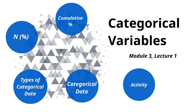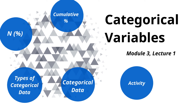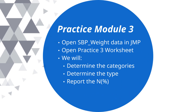For the next activity on introducing categorical variables, open practice module three in the SBP weight data, open the practice three worksheet, and we will determine the categories we have, what type of categorical variables we have, and then report the n and percent in JMP.